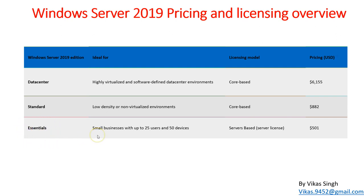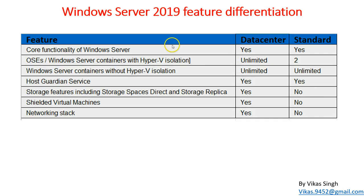The Essentials edition is for small businesses — up to 25 users and 50 devices. It's a server-based license priced at around $500 USD. With a server-based license, you buy one license per physical server you want to install it on — you don't need to count processor cores. These are the core features we're going to compare between Datacenter and Standard editions.